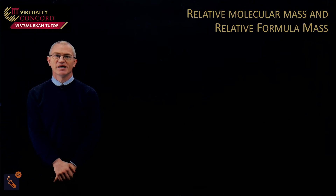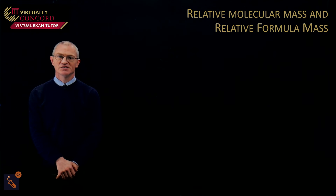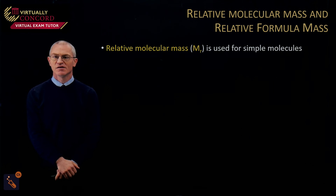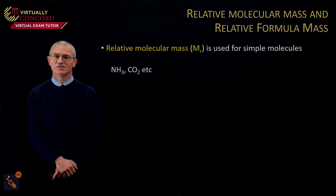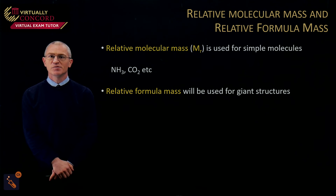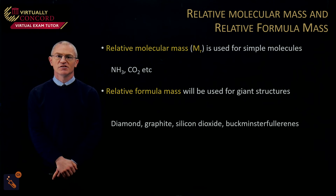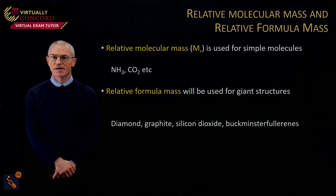Now let's talk about relative molecular mass and relative formula mass. At GCSE you used relative formula mass for simple molecules, but at A-level you'll use relative molecular mass, shortened to MR, for simple molecules such as NH3 and CO2. Relative formula mass is only used for giant structures including diamond, graphite, silicon dioxide, and buckminsterfullerene.